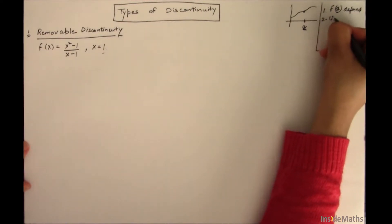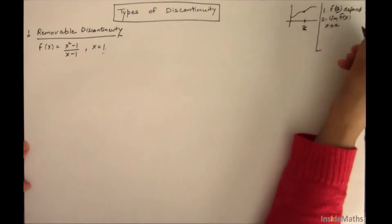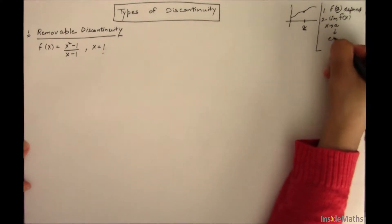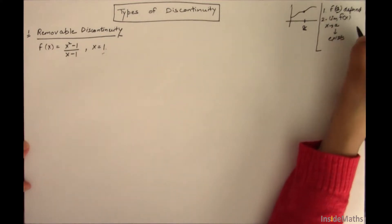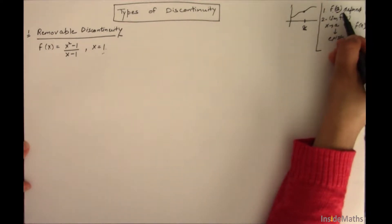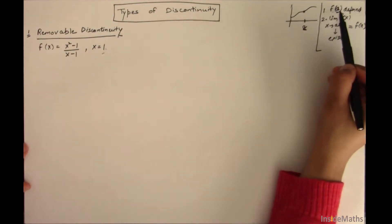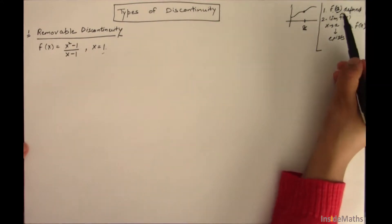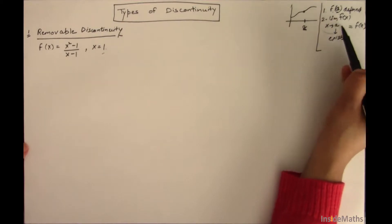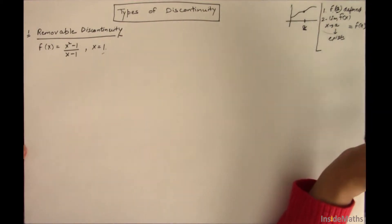The second condition is that the limit of the function at point A must exist and must be equal to the value of f(A). To check continuity, we have to find f(A) and find the limit. If both of these are equal, the function is continuous; otherwise the function is discontinuous.